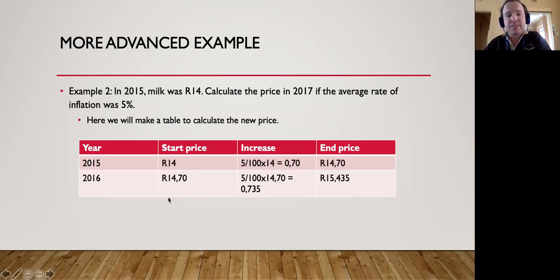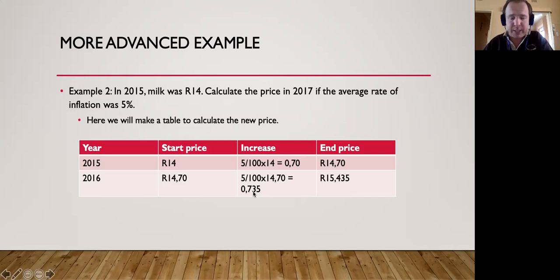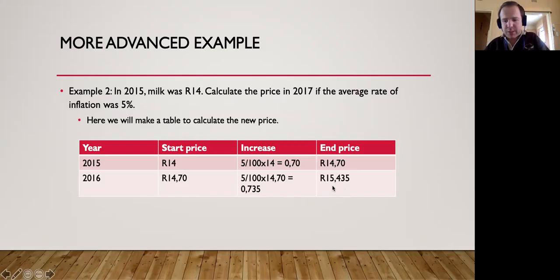The 2016 starting price is R14.70, since it equals the previous end price. We then work out five percent of R14.70, which gives us R0.735. Adding R14.70 plus R0.735 gives us R15.435, which rounds to R15.44. So the price of milk in 2017 would be R15.44.